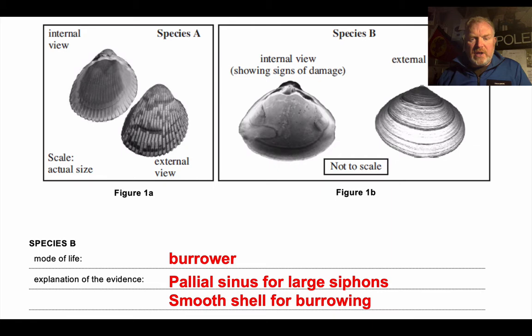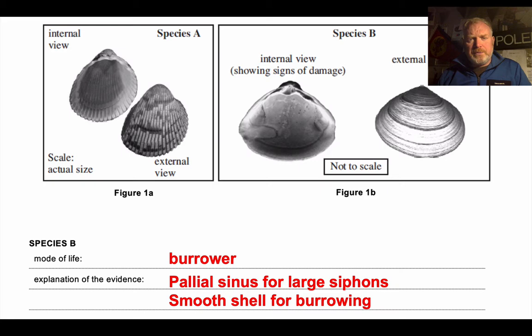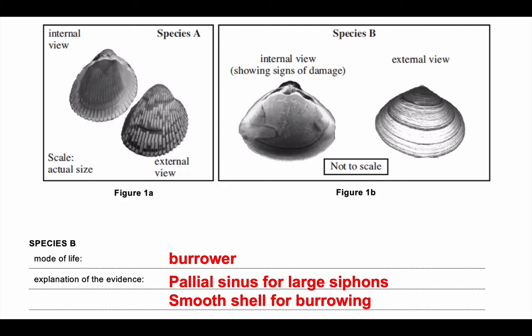We've got the palleal sinus — very clear evidence of a burrowing mode of life. That's where the siphon for the bivalve would have been retracted back into the shell; the only bivalves that needed siphons are the burrowers. Species B also has a smooth, quite streamlined shell which allowed it to dig quickly and easily down into the mud, indicating this one lived not just below the surface but a good way below the surface.